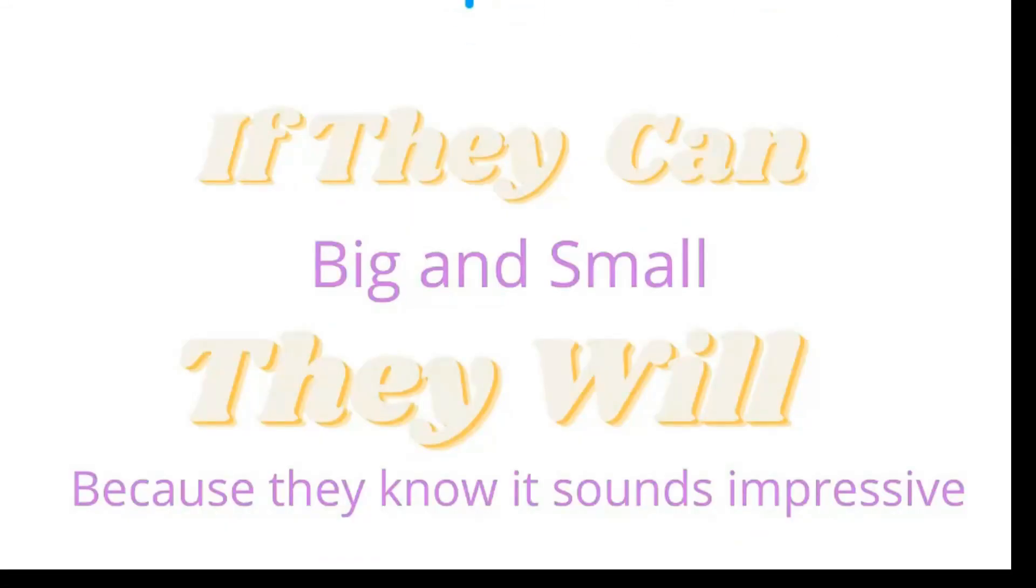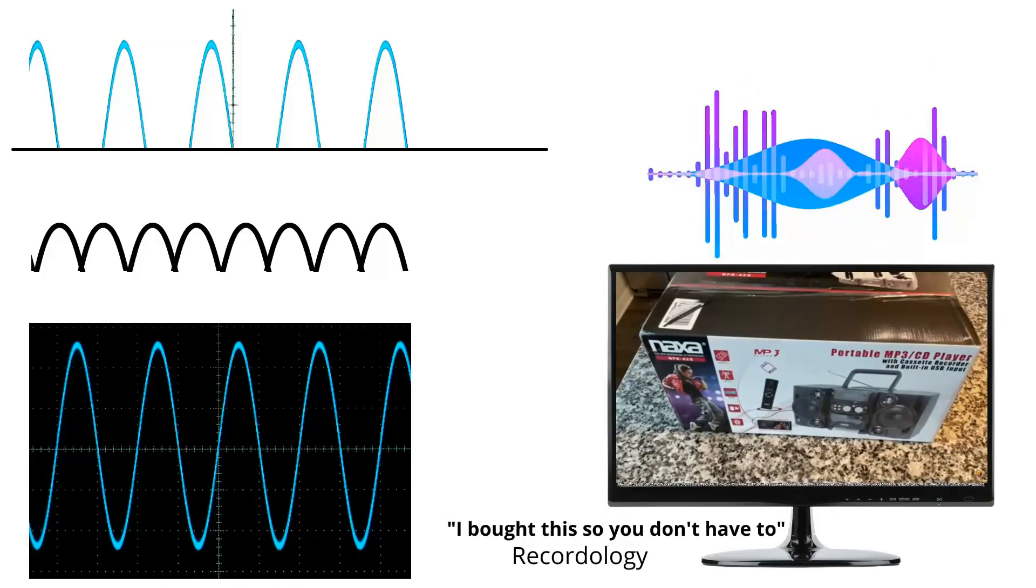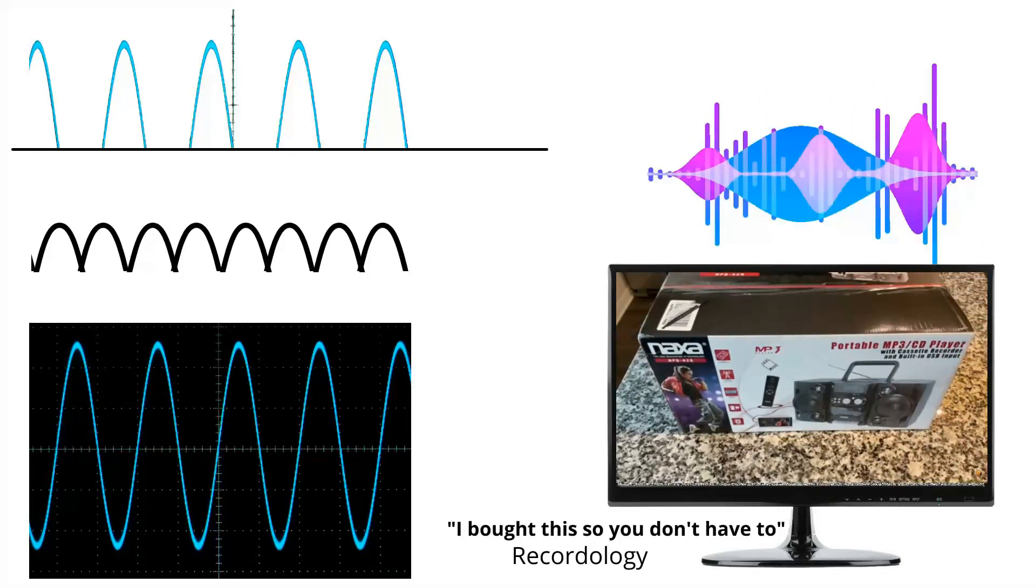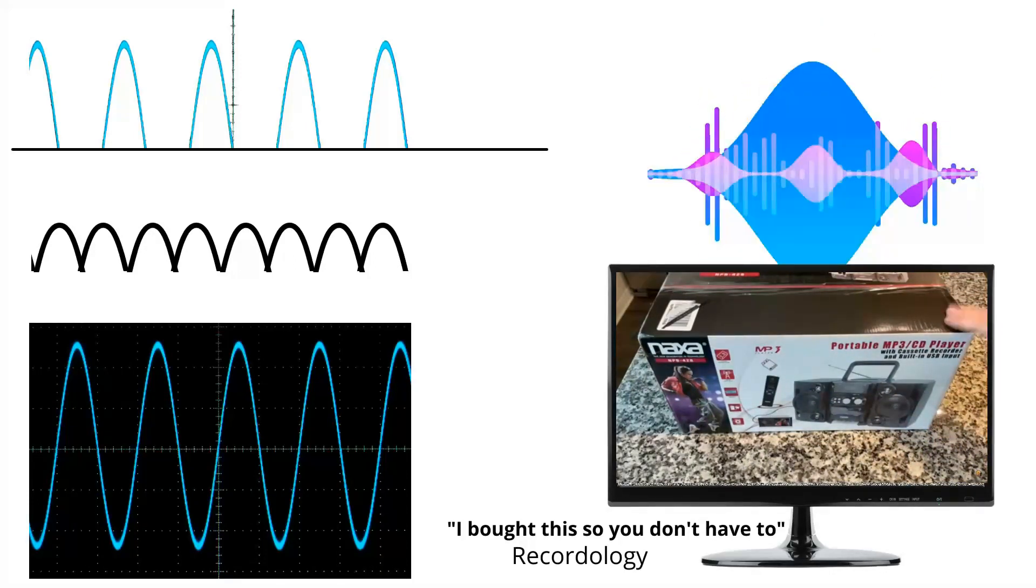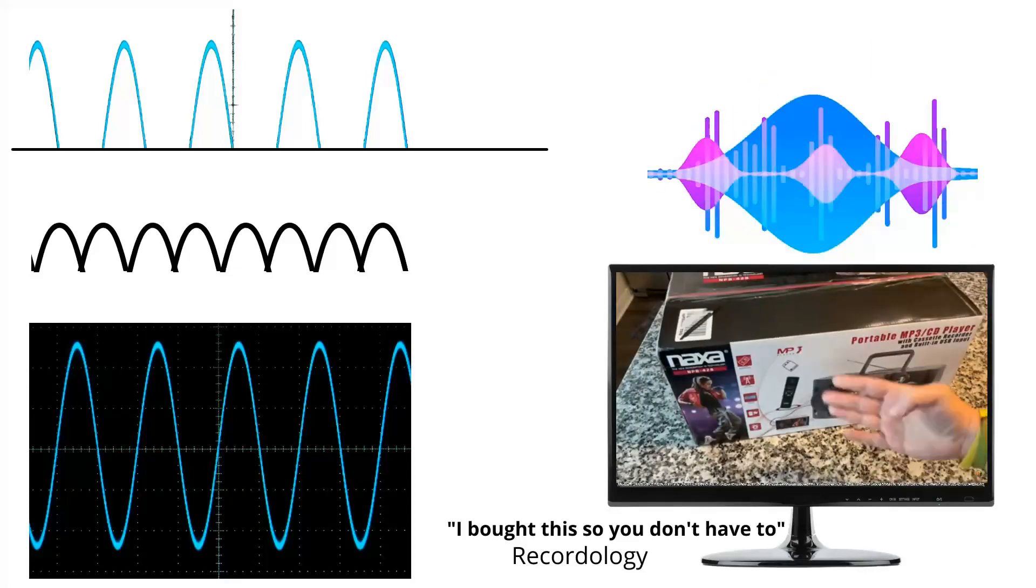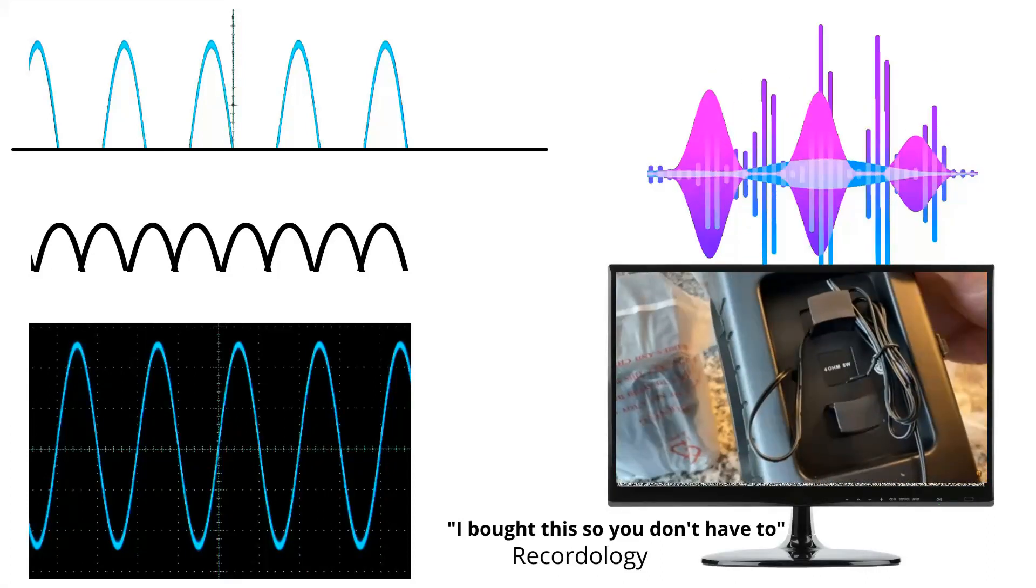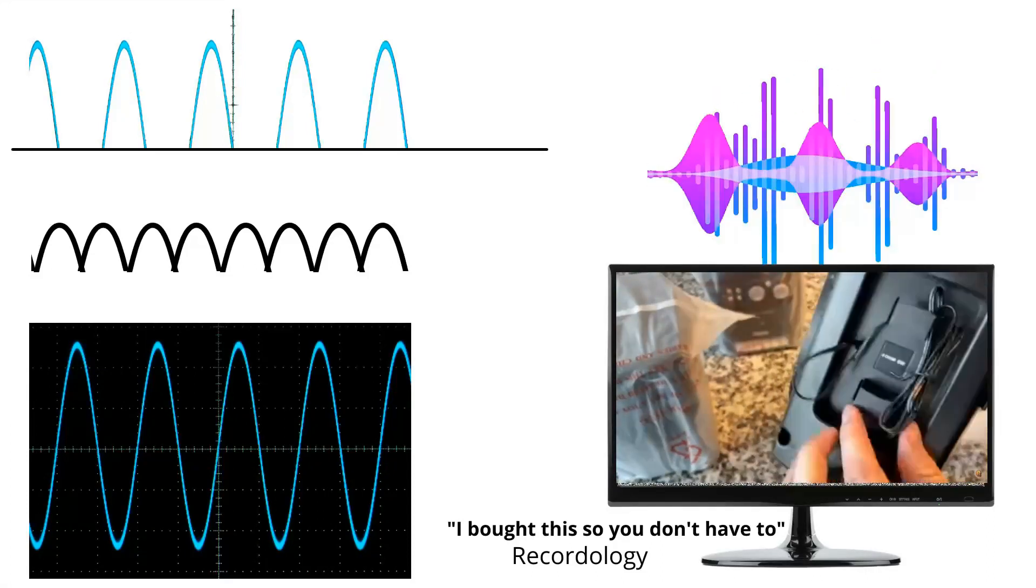Okay, let's get started on this. This is a nice simple one. I've got a clip here from my friend Recordology. So Recordology, what have you got there? The Naxa or Noxa NPB428 portable MP3 CD player with cassette recorder, built-in USB input, aux input, a remote control. We got an 8 watt speaker.